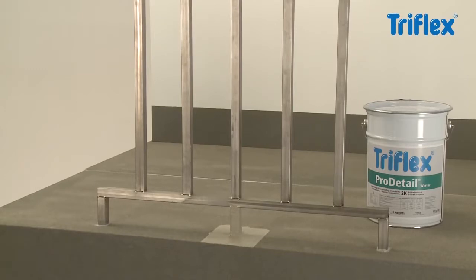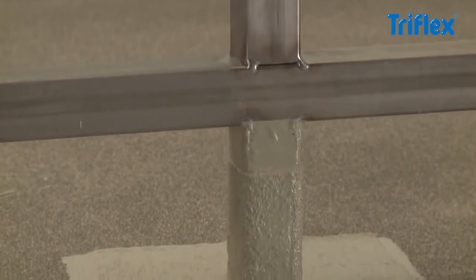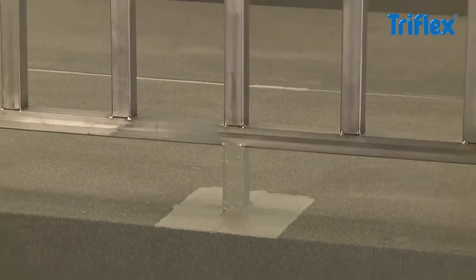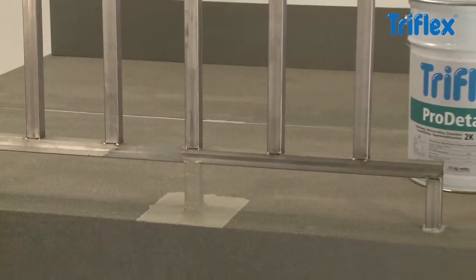Thanks to the full surface adhesion, there is no likelihood of rainwater penetrating. It takes just 30 minutes for the waterproofing to cure and become fully rainproof. The short curing time of Triflex Pro Detail allows swift completion and offers working security even in unpredictable weather conditions.